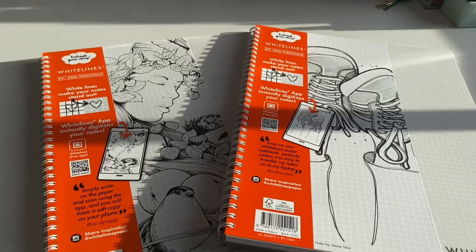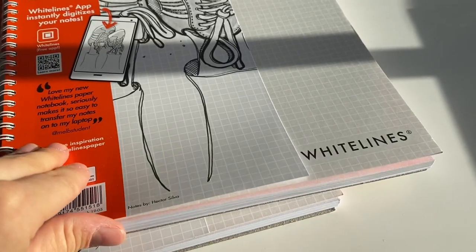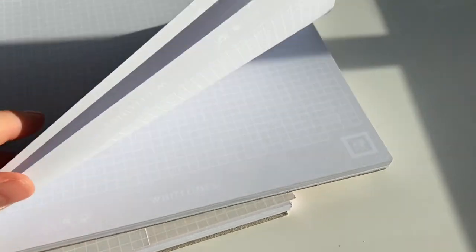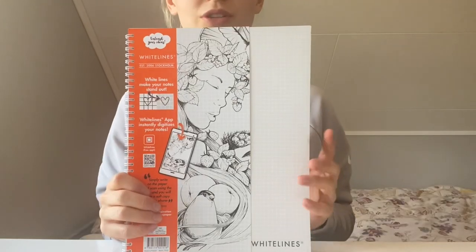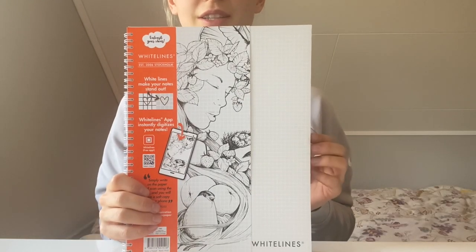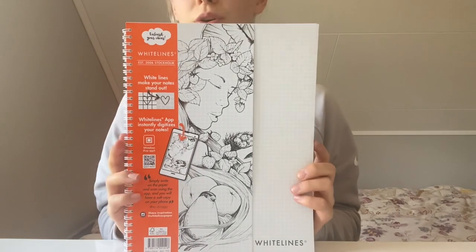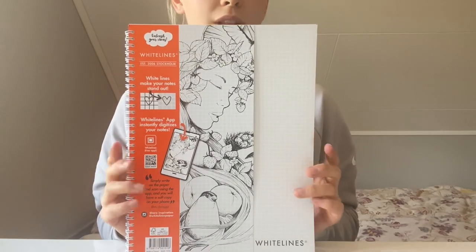As the name suggests, these have white lines and it's the size A4. It has 80 GSM paper, which I really like because when I take my notes I like to use strong highlighters or draw things in my notes. This way I know that I won't bleed through or even ghost. This is something that I really want a notebook to have.